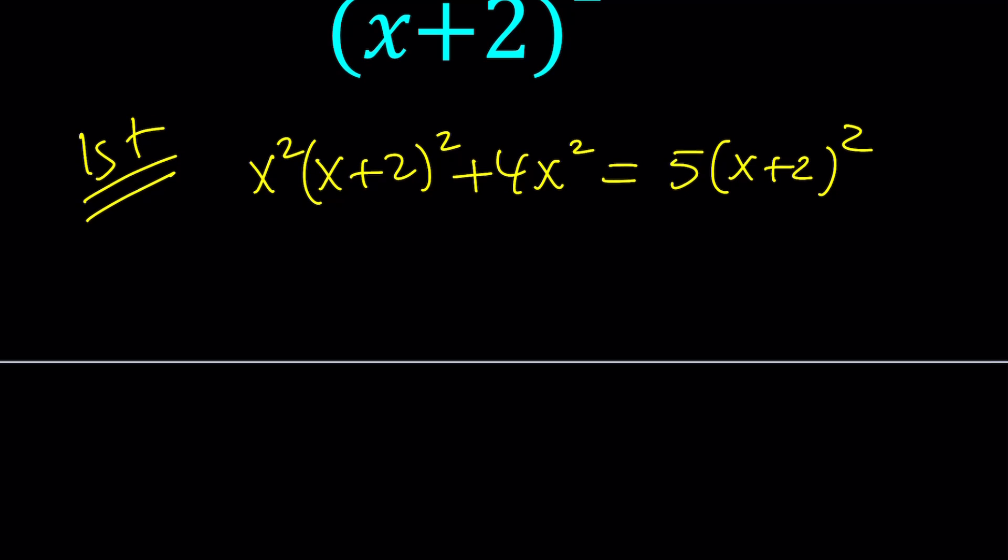If you expand this you're going to get x²(x²+4x+4) + 4x². And then on the right hand side you're going to get 5(x²+4x+4).